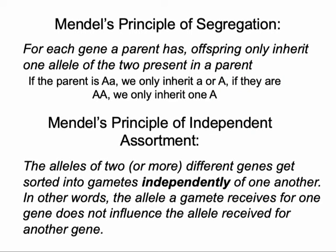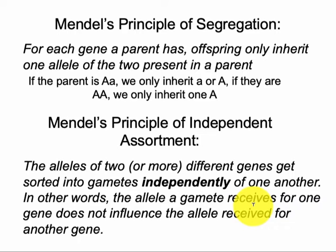The other principle that Mendel proposed is the principle of independent assortment. This principle is only visible when we're looking at two or more genes at the same time — so this is when we're doing dihybrid crosses. The principle of independent assortment says the alleles for two or more genes get sorted into gametes independently of one another. In other words, the allele a gamete receives for one gene does not influence the allele received for the other gene.